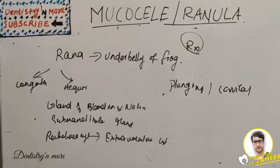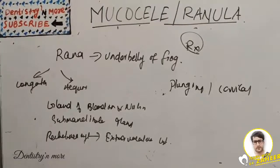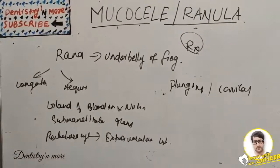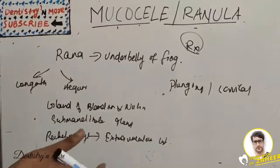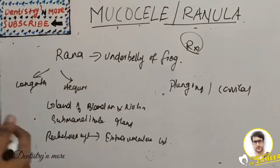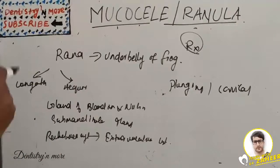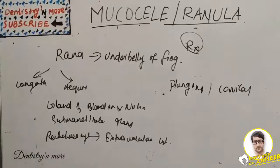Simple aspiration or drainage can be done but will result in high recurrence. Both simple and plunging ranula require excision of the cyst wall and sublingual gland. Great care must be taken to preserve the lingual nerve. Sometimes a ranula presenting in the neck may need a cervical incision.